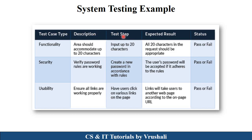Now here is a basic example of system testing. In a particular registration form, there is an address field with a text box. This address box can contain only 20 characters at a time. When a user enters more than 20 characters, it displays an error. This is called functionality testing — they test the functionality and features of a particular component. If the test passes, it confirms that the user can enter up to 20 characters in the address box.